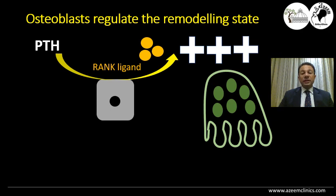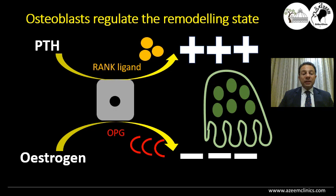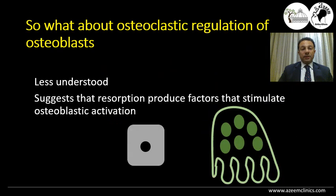The balancing mechanism is under the influence of different stimuli. For example, parathyroid hormone stimulates the osteoblasts to secrete the RANK ligand, stimulating osteoclastic activity and releasing more calcium into the blood. While sex hormones, mainly estrogen, stimulate the osteoblasts to secrete OPG, blocking the bone resorption process. Other stimuli like calcitonin act directly to stimulate osteoclastic activity. There is also a less-understood feedback mechanism between the osteoclastic activity and the osteoblasts.